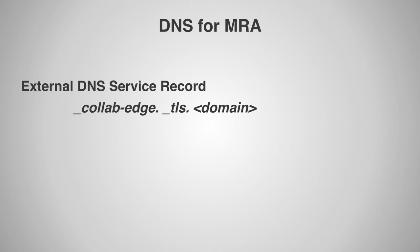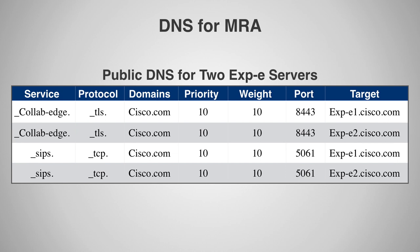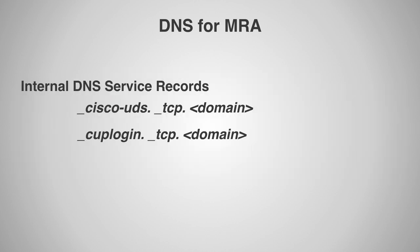Your external DNS server needs to be configured with this service record, so that endpoints sitting outside your network can discover that they should use MRA. The service records need to point to each cluster member of the edge server. Here are some examples of the service records needed on a public DNS for two Cisco Expressway Edge servers clustered together. The internal DNS server also has to be configured with an SRV record, so that endpoints inside the network will know to register directly to the CUCM.